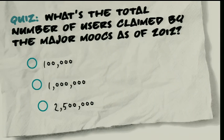We played a very small part. To illustrate how small: the total number of users claimed by the major MOOCs — Coursera, edX, Udacity — as of 2012 is 2.5 million. Of course, that's just users — possibly double counted, possibly not completing courses. But it's the number willing to give their email address. Jörn and I, our courses are in the range of a few thousands, so we're a very small part of that.